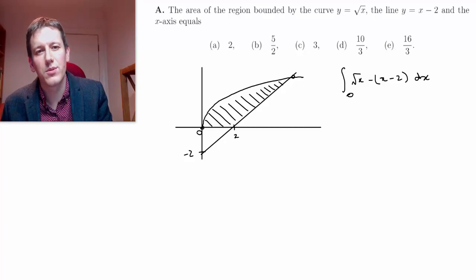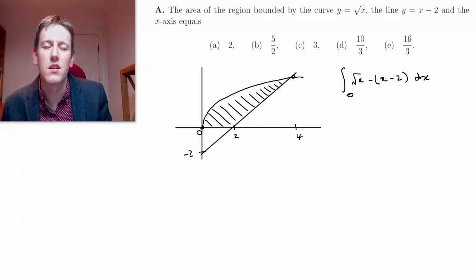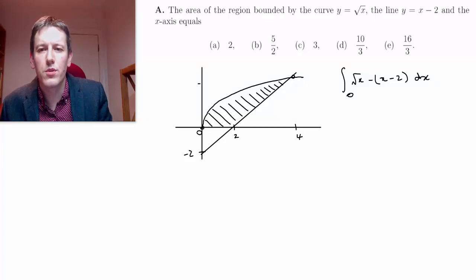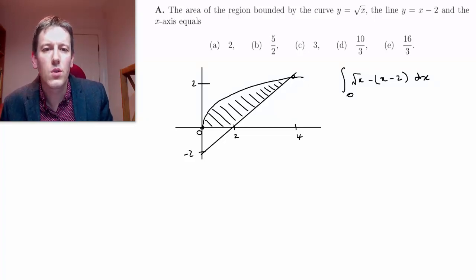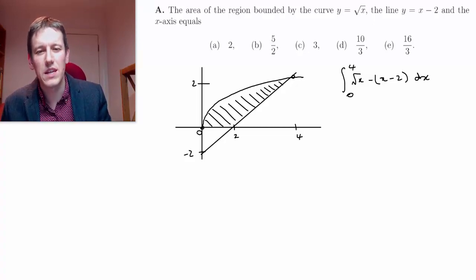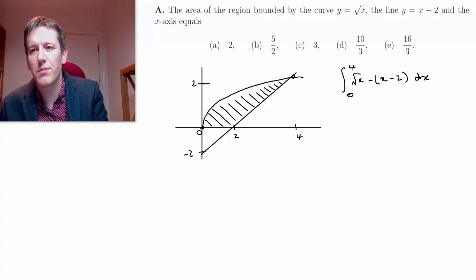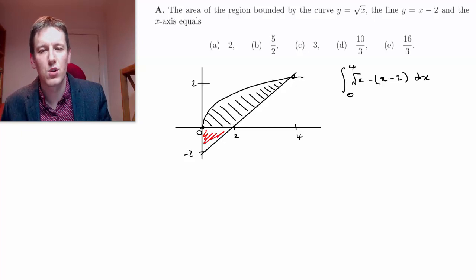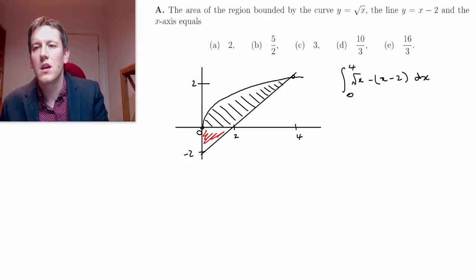I get y equals square root of 4 is 2, and y equals 4 minus 2, which is 2 on this one, so this is the point with x coordinate 4 and y coordinate 2. So I want to integrate this between 0 and 4, and what that will give me is not exactly the area we want, but it will give me this shaded area and the area of this red triangle here, because it will give me the whole area between those two curves between those points. But we can subtract that off easily at the end, because it's just a triangle.